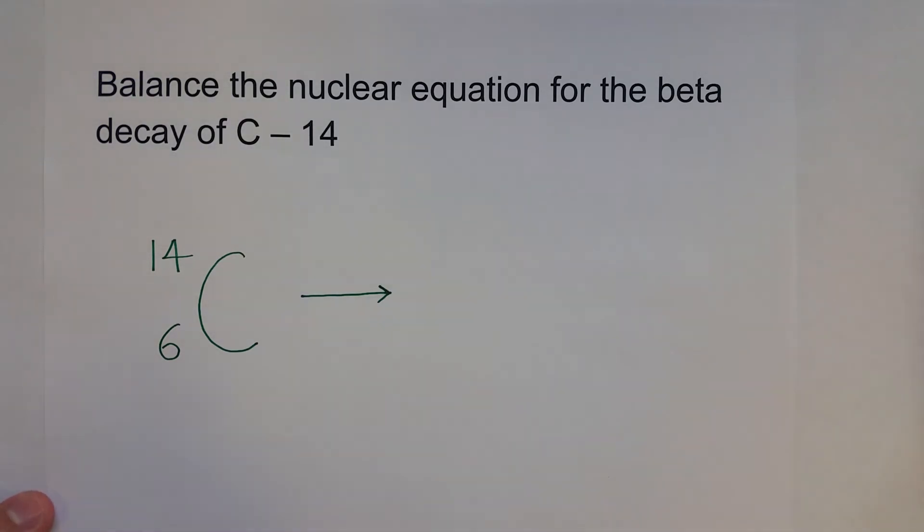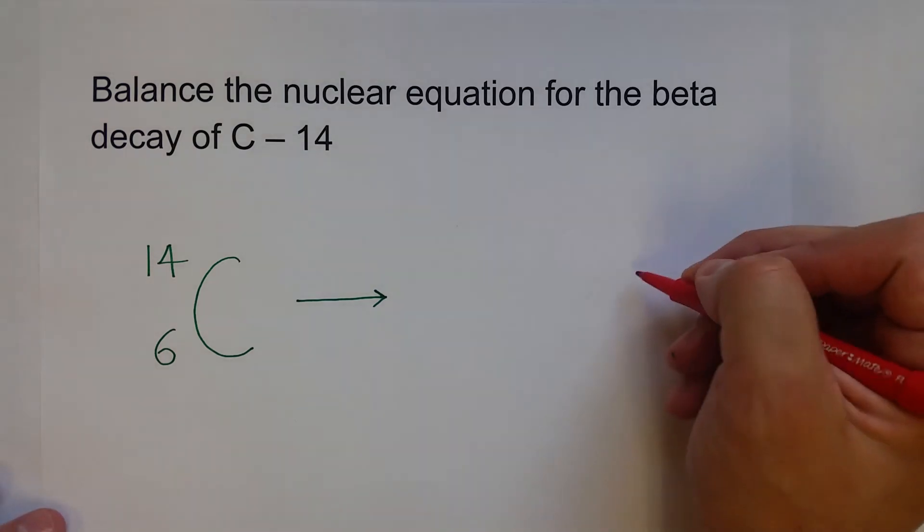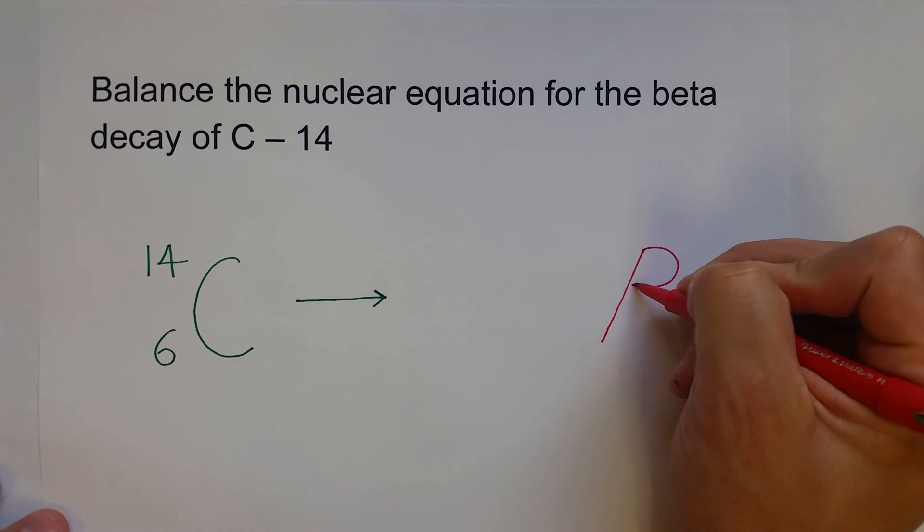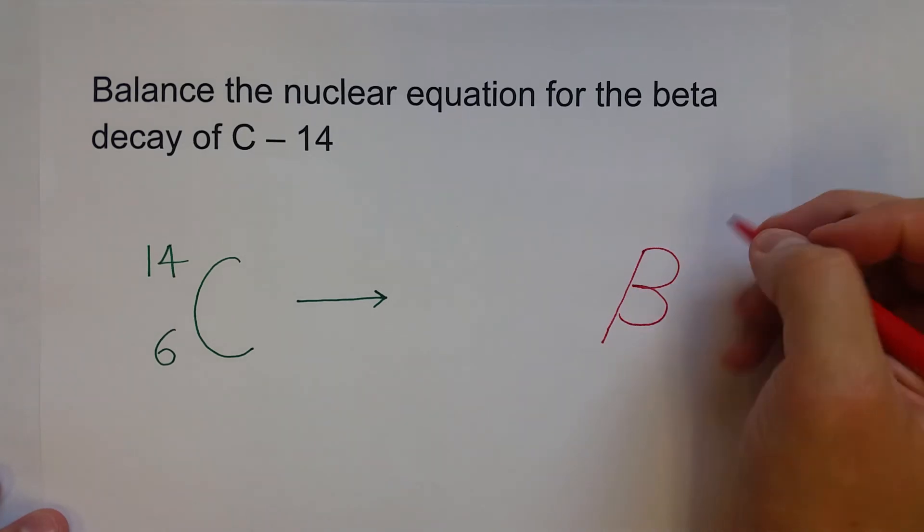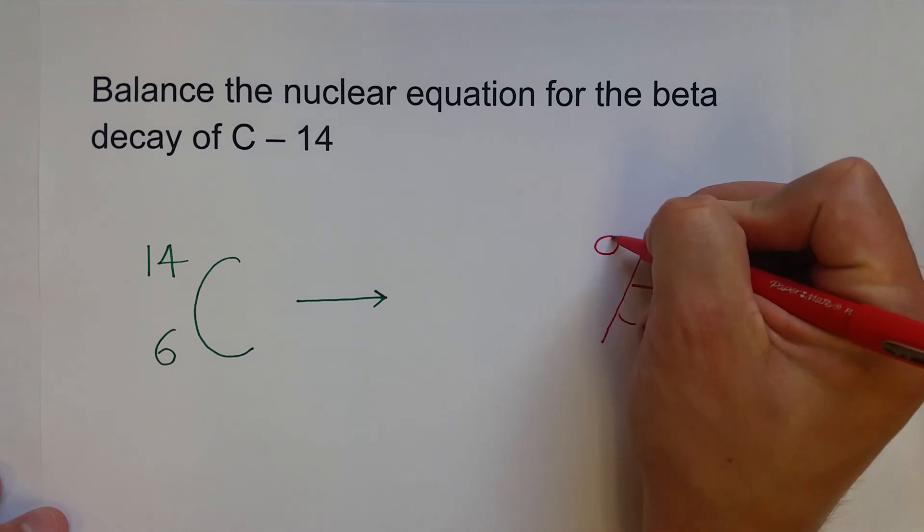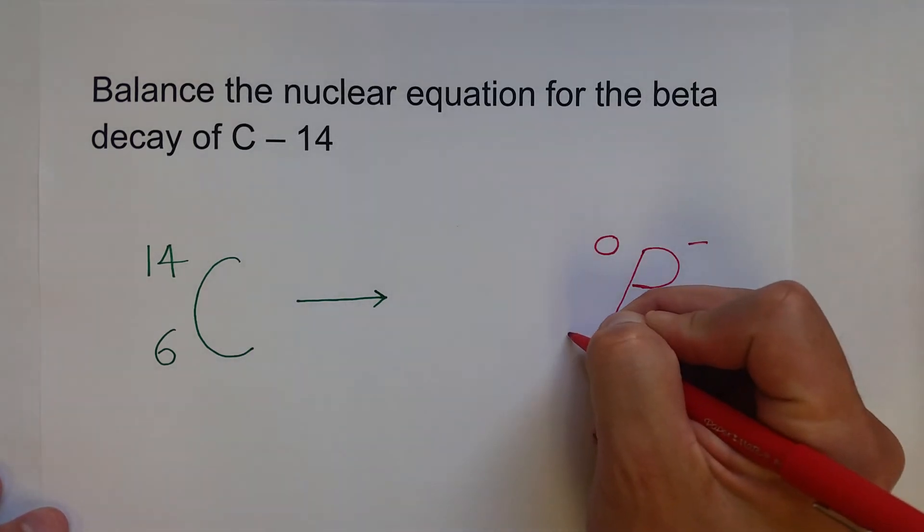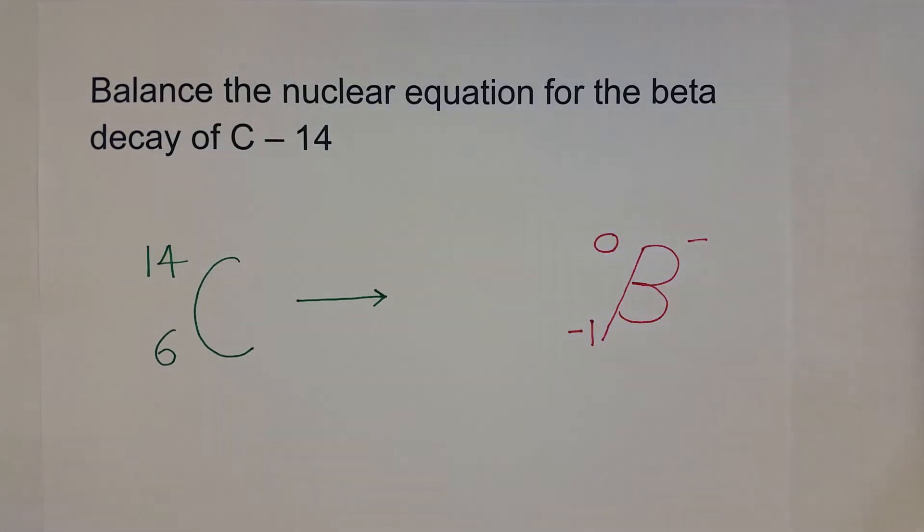What is it decaying into? Well, the problem tells us that this is beta decay. And just like the positron previously, we're going to use beta as the symbol. It's a beta particle, so essentially it's just an electron that's being emitted from the nucleus. It doesn't have any protons or neutrons. We use a sort of pseudo-atomic number, or minus one, to make sure that we can balance this nuclear equation.